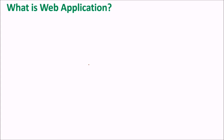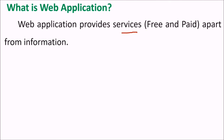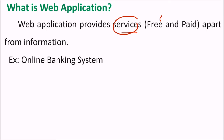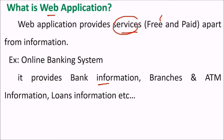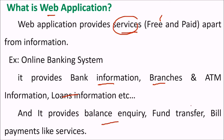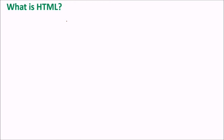What is a web application? A web application is an application that works on the web to solve a certain business problem or business logic, to do certain functionality. A web application provides services — free or paid — apart from just providing information. For example, an online banking system provides information like branch and ATM details, but also tasks like balance inquiry, fund transfer, and bill payment. These services are provided by a web application.